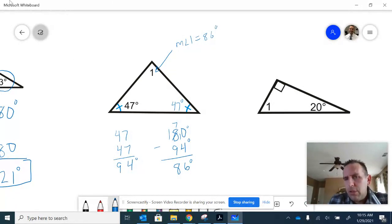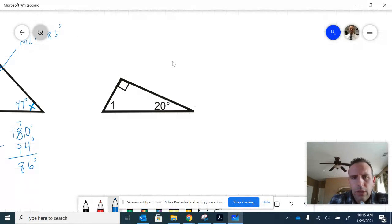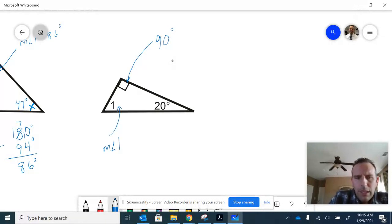This third example to the right shows a right triangle, so it has the marking there. We would know that's 90 degrees, so then we could realize that the measure of angle 1 must be 70 degrees. And you can check that 90 and 20 and 70 have a sum of 180.